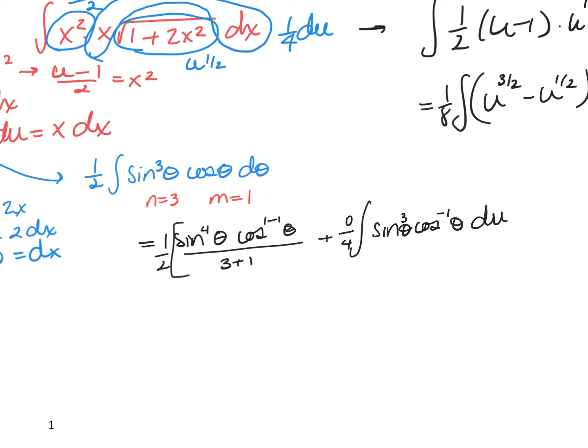Well, 0 times anything is going to go to 0. So I end up with 1 over 2 multiplied by 4, 1 eighth, the sine to the fourth of theta plus c.